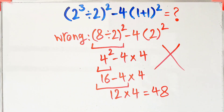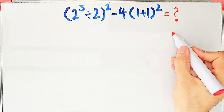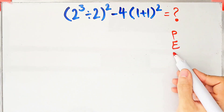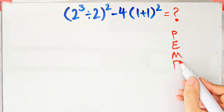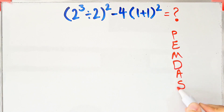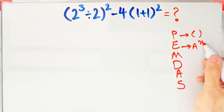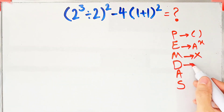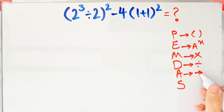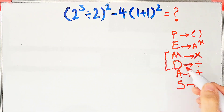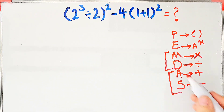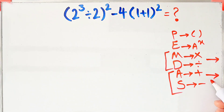To solve this question, we need to follow the order of operations, which is PEMDAS. PEMDAS shows the priority of mathematical operations. P stands for parenthesis, E for exponent, M for multiplication, D for division, A for addition, and S for subtraction. Multiplication and division have the same priority level, as do addition and subtraction — when both appear, we simplify from left to right.